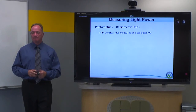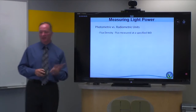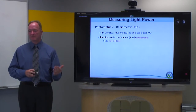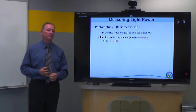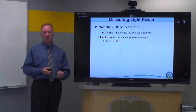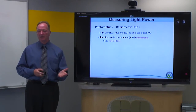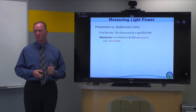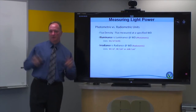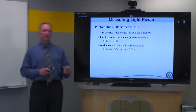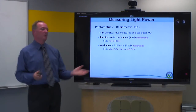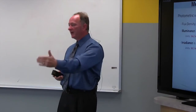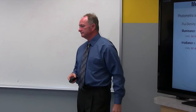Looking at photometric versus radiometric units in more detail: illuminance is a measurement at a specified working distance, typically expressed in lux — a photometric unit, which is why you'll see it on fluorescent tubes. Irradiance is its radiometric counterpart, expressed in watts per square meter or milliwatts per square centimeter. The units don't really matter as long as they're consistent when comparing apples to apples.